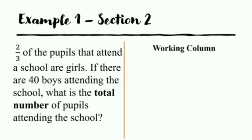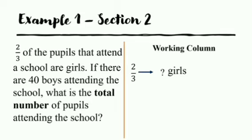This is my working column. Now, if they said two-thirds of the pupils that attend a school are girls, then this means we do not know the whole number represented by two-thirds. So we do not know the number of girls at the school. However, they went on to give us the whole number representing boys. Because they gave us the fraction representing girls, we can find the fraction representing boys. The fraction that represents boys will be the whole minus two-thirds, which is equal to one-third.